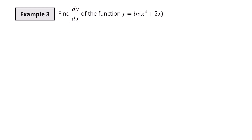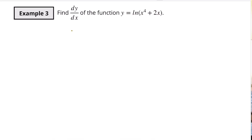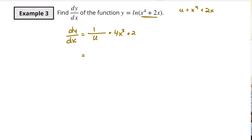This example says find the derivative of y with respect to x for the function ln(x to the fourth plus 2x). The derivative of the outside piece — the derivative of ln(u) — is one over u, where u is x to the fourth plus 2x. Then we multiply by the derivative of the inside piece, which is 4x cubed plus 2. So in the numerator we have 4x cubed plus 2, and in the denominator we have x to the fourth plus 2x. That is the derivative of this function.